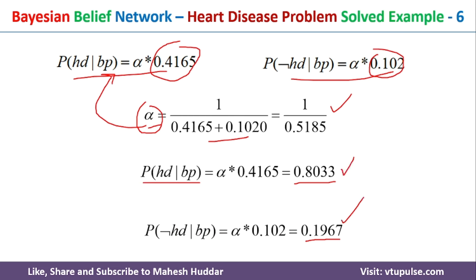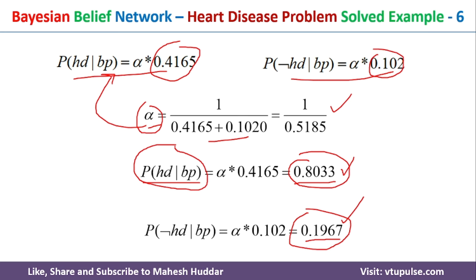Comparing these two probabilities — 0.8083 vs. 0.1967 — since 0.80 is greater than 0.19, we conclude that given high blood pressure, the person is likely having heart disease. In this video, I discussed how to solve a simple numerical example on Bayesian belief network for the heart disease problem. I hope the concept is clear. If you liked the video, please like, share, subscribe, and press the bell icon for regular updates. Thank you for watching.